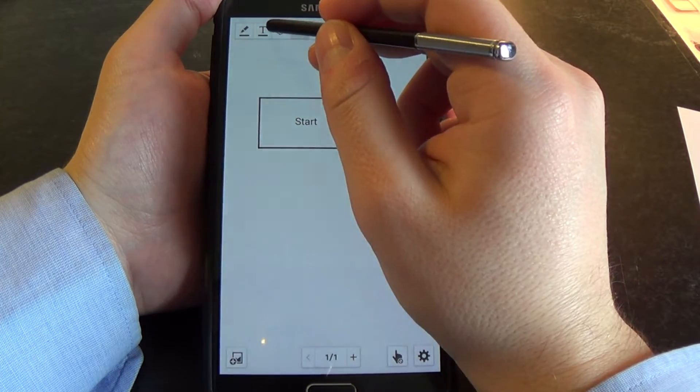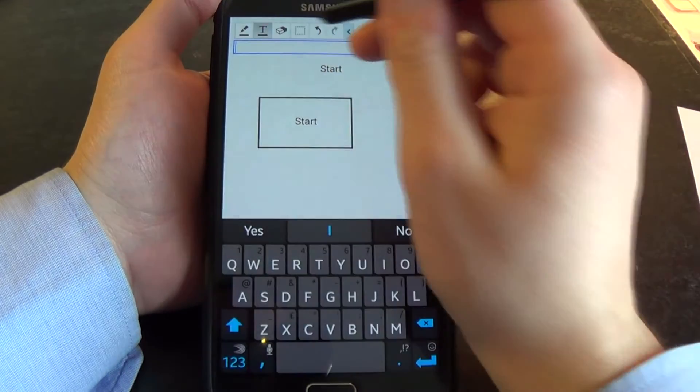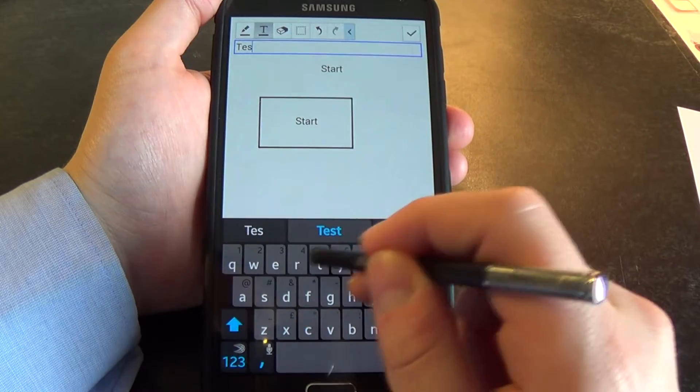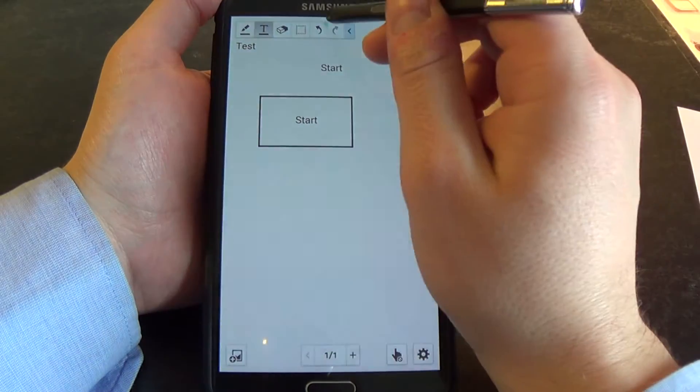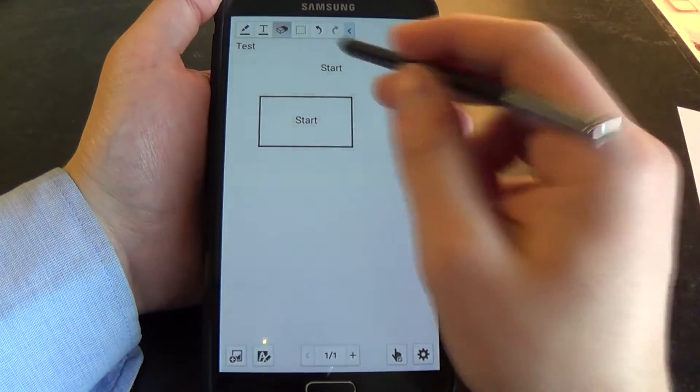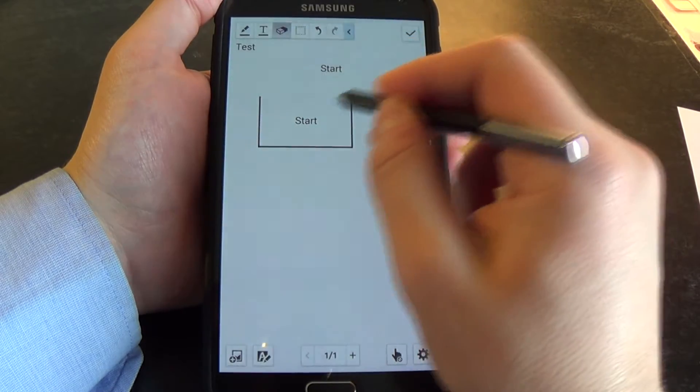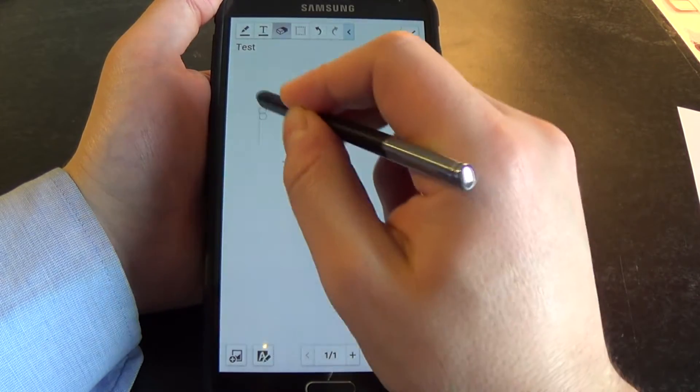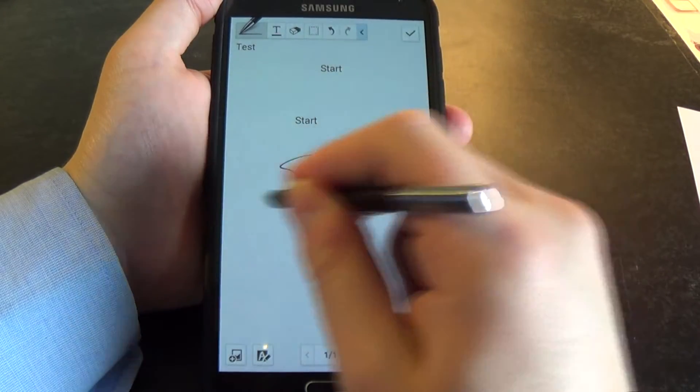And you have this text mode tool where you can just type in Test. And you have the rubber tool. Now you can't erase text, but you can erase anything you've drawn.